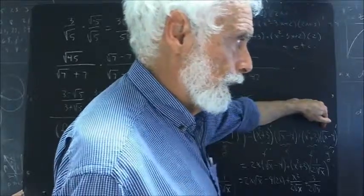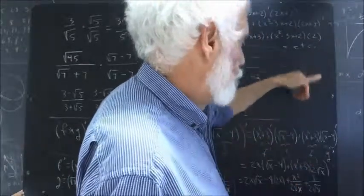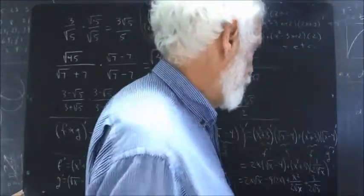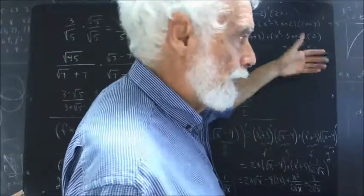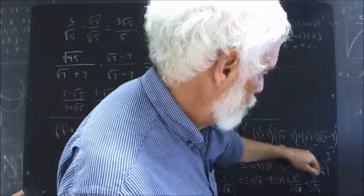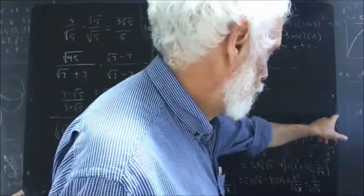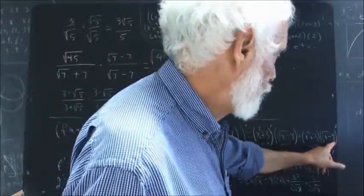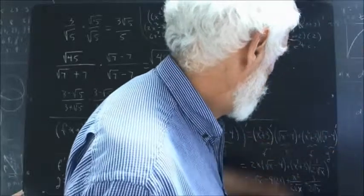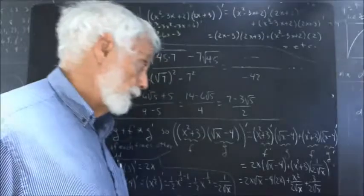And then we take x squared plus 3 and multiply it by what we get when we take the derivative of the square root of x minus 4. The derivative of the square root of x — that's x to the 1/2 — so the derivative is 1/2 x to the 1/2 minus 1, which is 1/2 x to the negative 1/2, which is 1/2 times 1 over the square root of x, giving us 1 over 2 times the square root of x. So the square root of x minus 4, prime, becomes 1 over 2 square root of x, since the derivative of the constant 4 is 0. Then we simply multiply all this out.